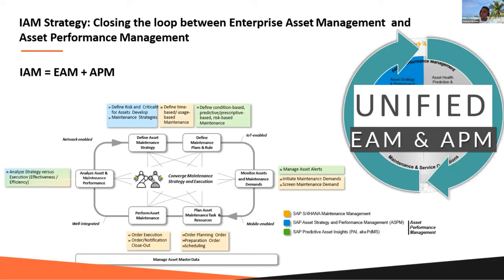This slide talks about what IAM is — intelligent asset management is basically EAM plus APM. From the SAP perspective, the inner rectangle with six boxes represents standard SAP processes, and the outer boxes represent SAP APM — asset performance management processes.